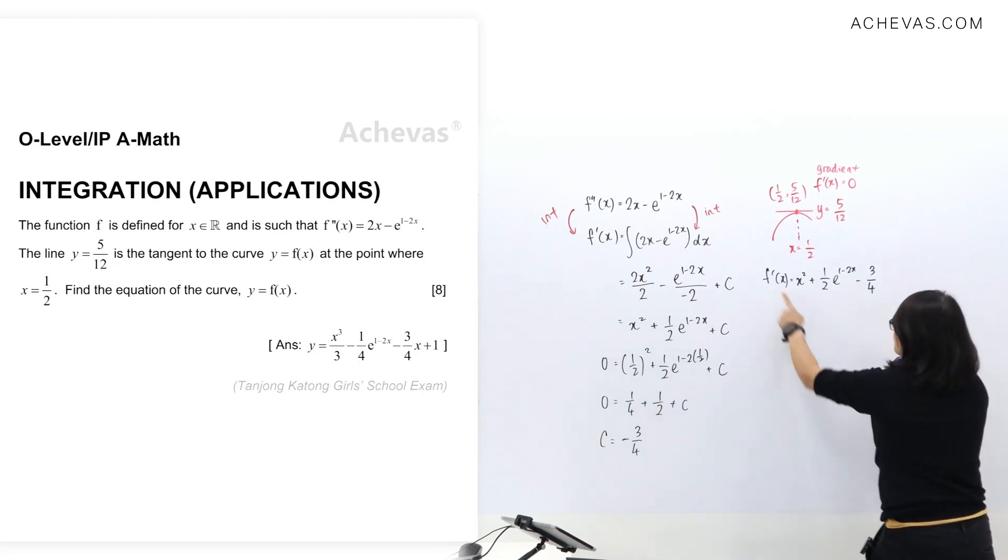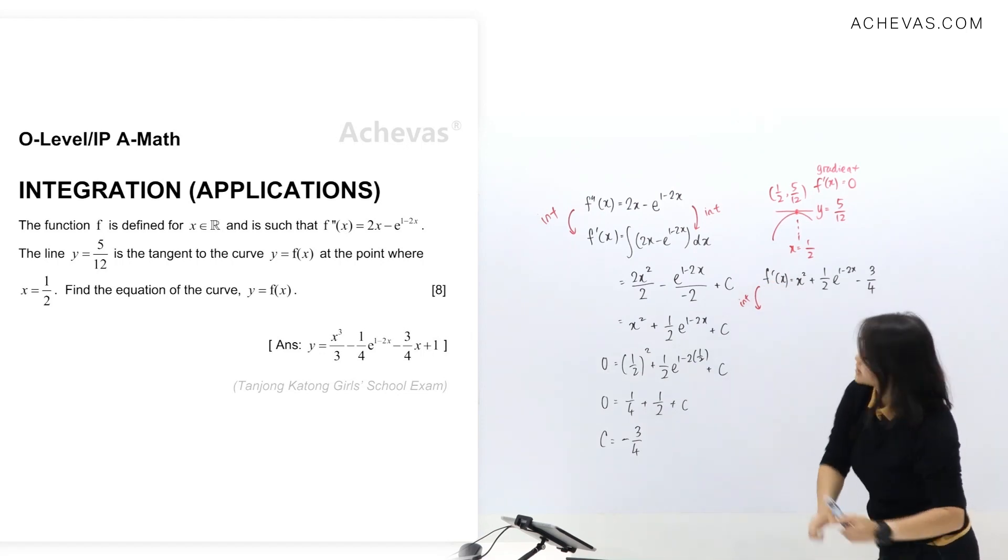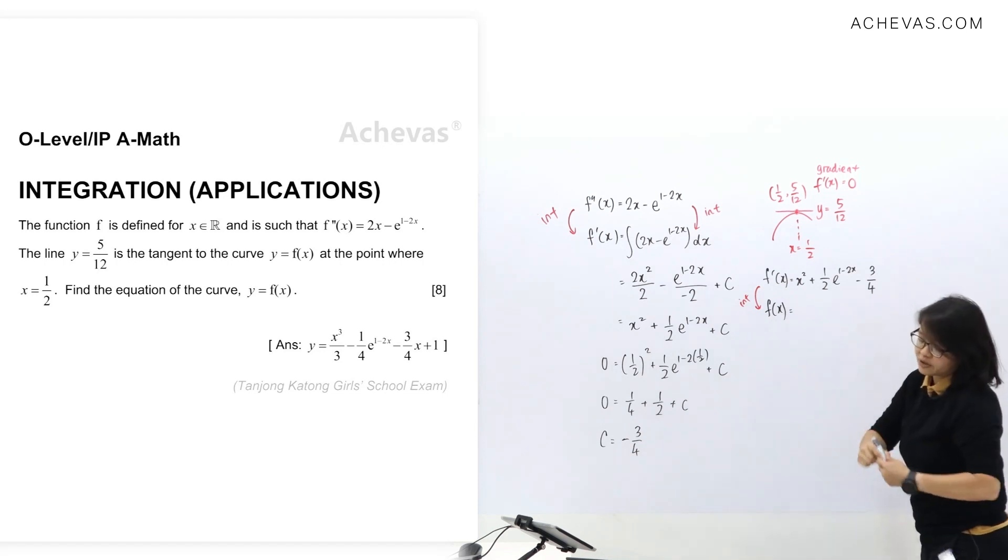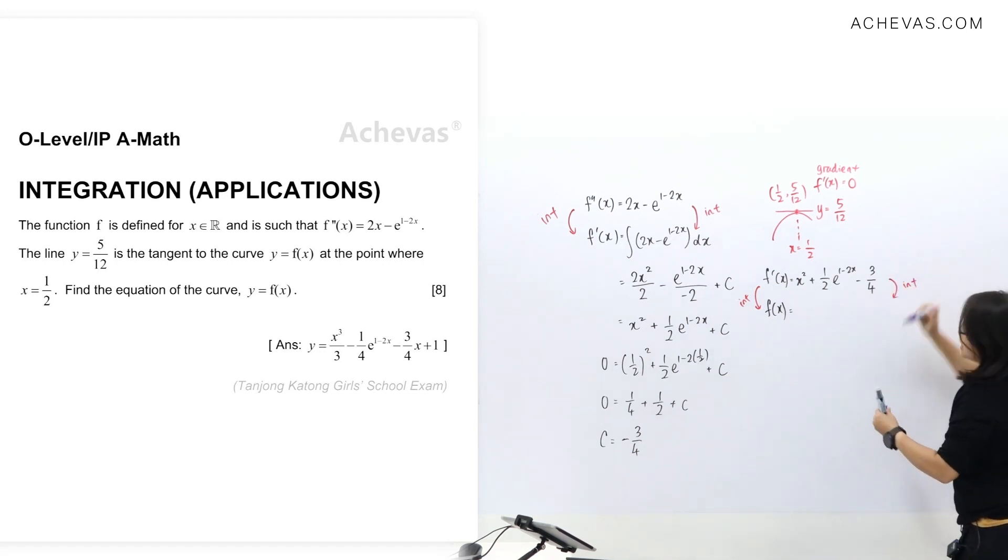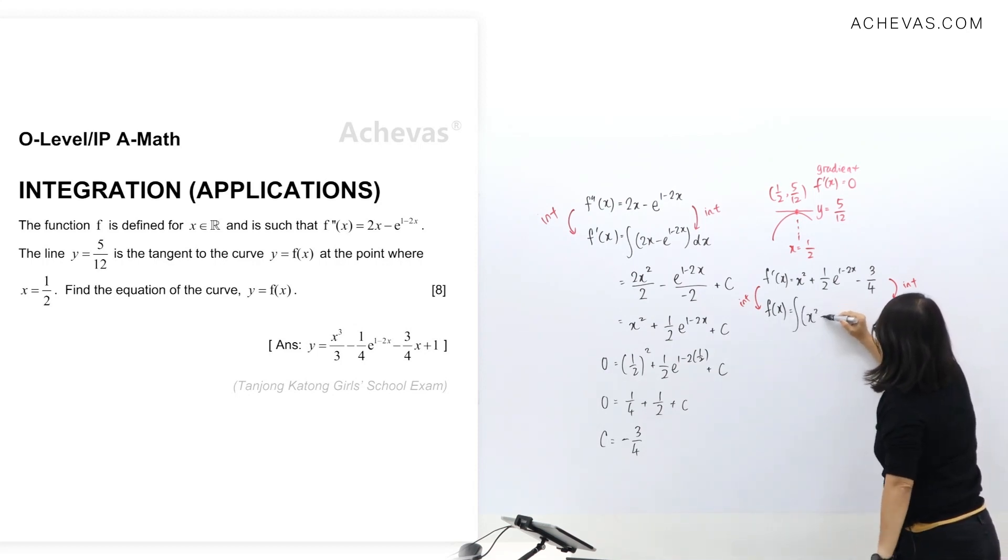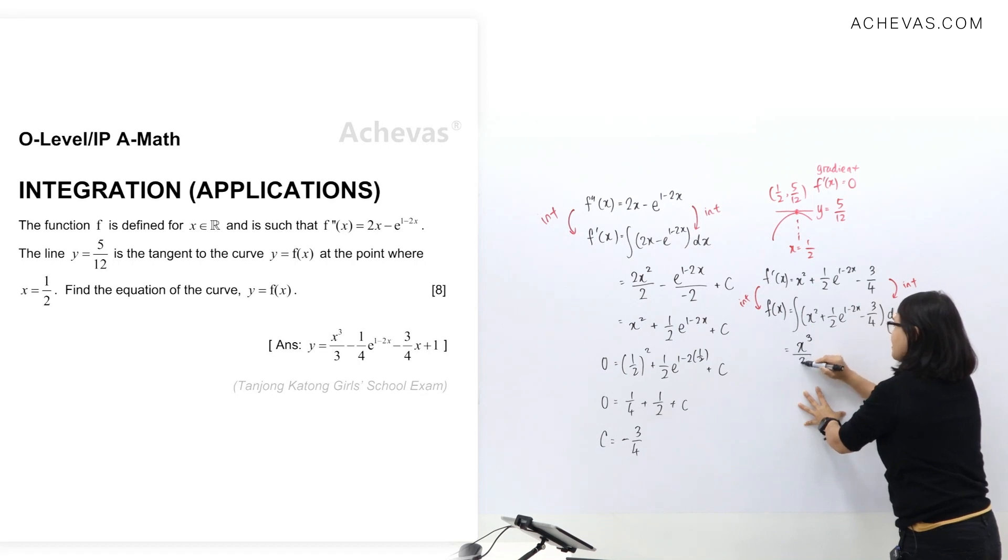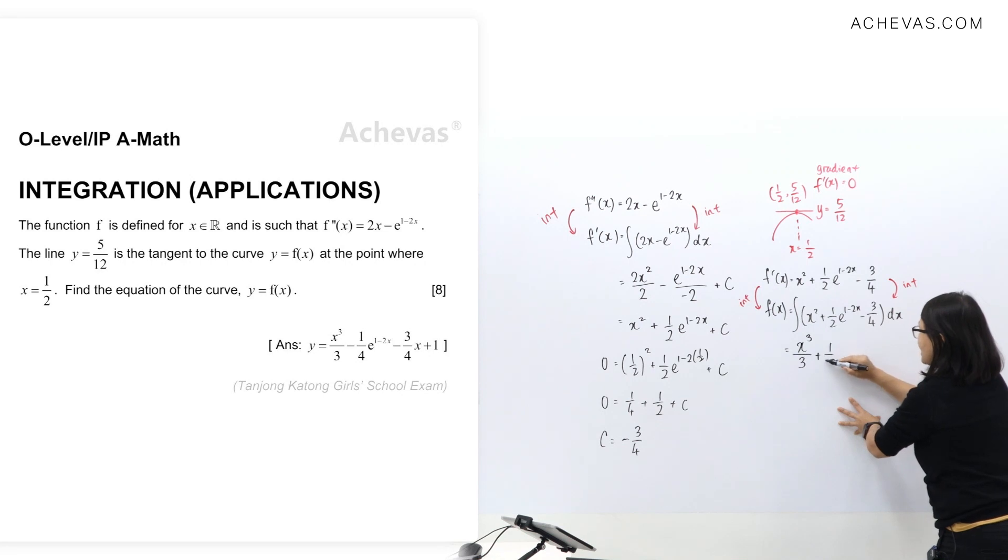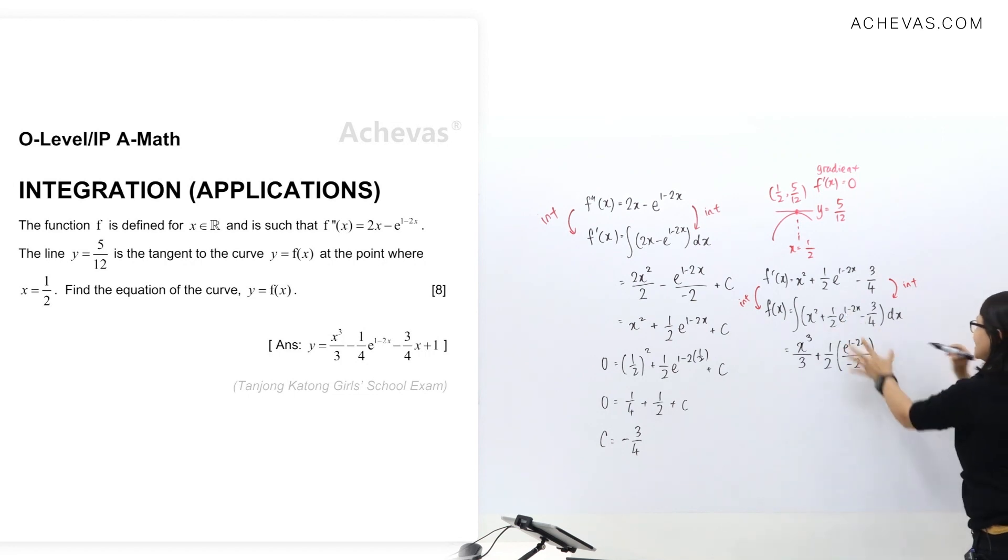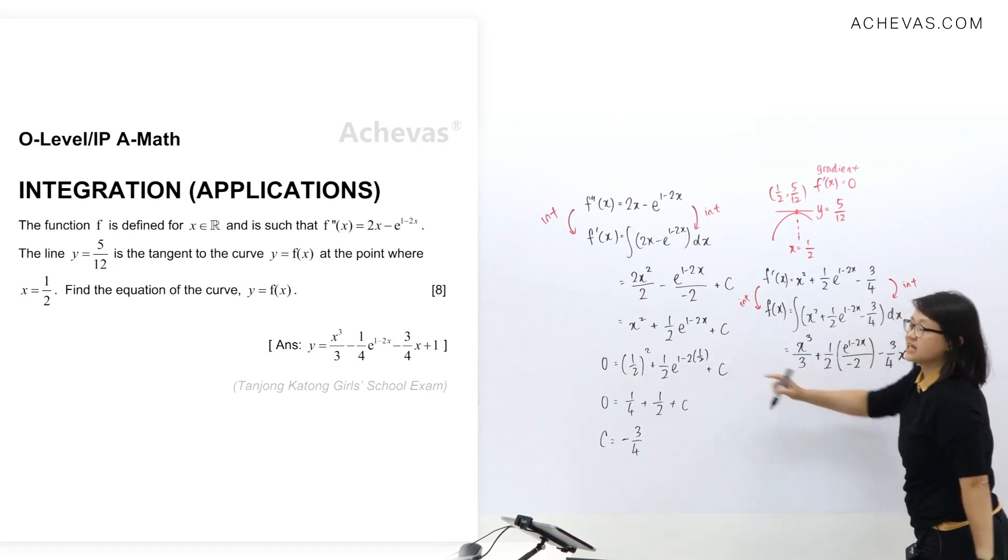Let's do again integration step from f'(x). Integrate will give me f(x). The right hand side, we're going to do the same integration of this expression here. Let me write down the integration sign of this whole expression followed by dx. Integration again: I'm going to raise power divided by power, so that's going to be x³/3. Exponent part: I'm going to write the half here and copy the exponent part, divide by coefficient of x which is negative 2. Integration of constant here will lead you to -3/4 x.